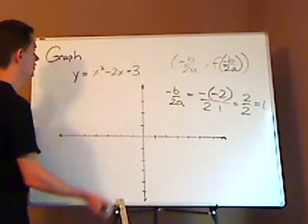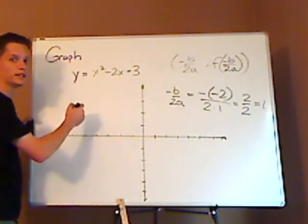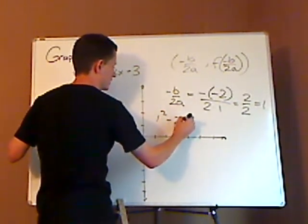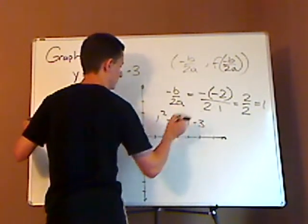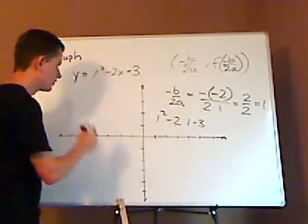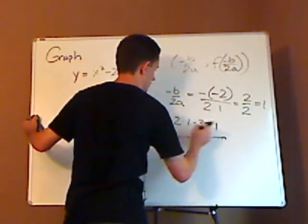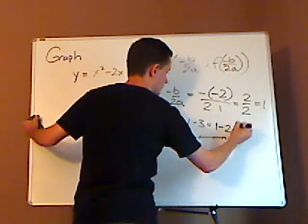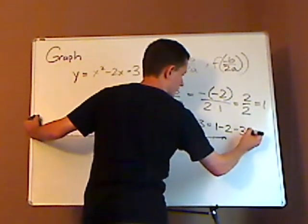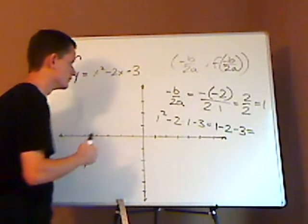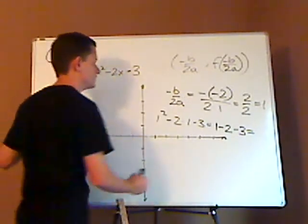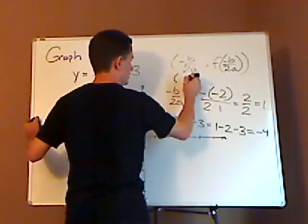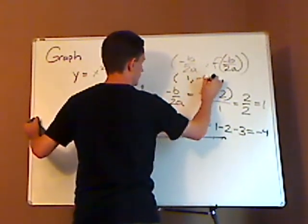And you take that 1 and you just plug it in to find the y-coordinate. All right, so it would be 1 squared minus 2 times 1 minus 3. 1 squared is 1, 2 times 1 is minus 2 minus 3. And so that's going to give me 1 minus 2 is negative 1, minus 3 is negative 4. So my vertex is 1, negative 4.